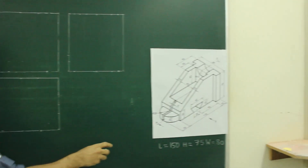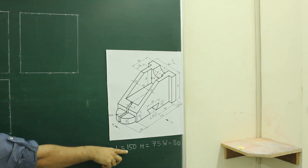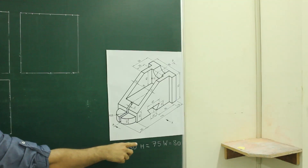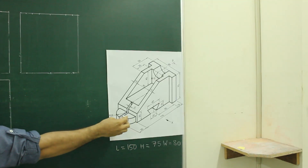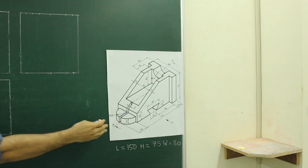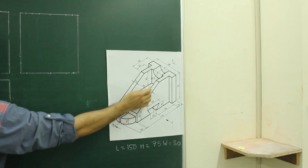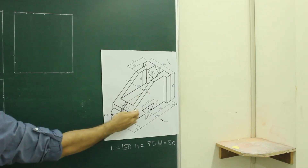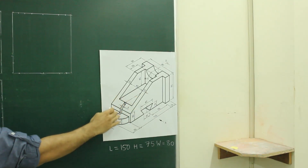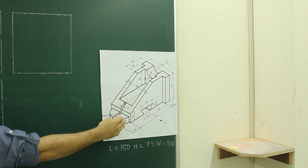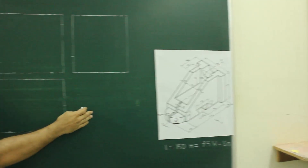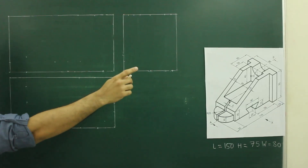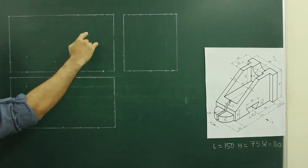In this, the length is 150, height is 75, and width is 80. We will start with the front view first, then draw the top view and side view. So first we will see the front view.